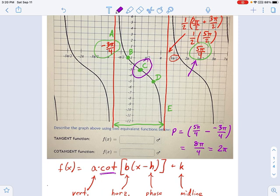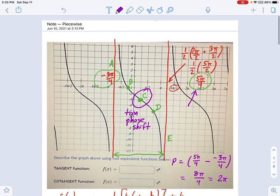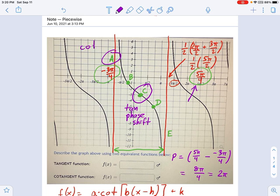In a tangent function, this is your phase shift. I'm going to write that right here. Tangent phase shift. That is the middle point. Whereas the cotangent phase shift is over here, the left side. Cotangent phase shift. Of course, any asymptote would do for cotangent, but I usually pick the left one.